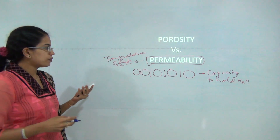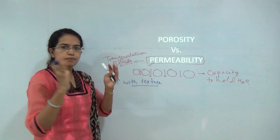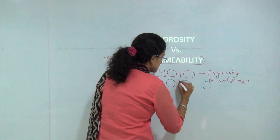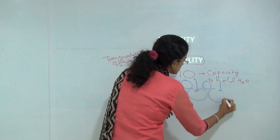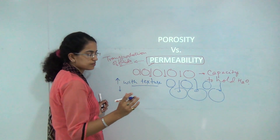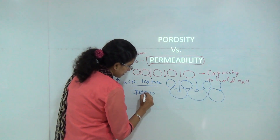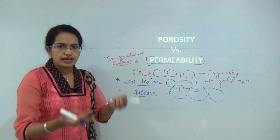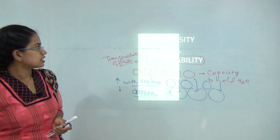Porosity increases with texture — if there are bigger size particles, porosity would increase, as large boulders can hold a lot of water within them. However, permeability decreases with texture — for a soil to be highly permeable you need minute particles. So porosity is the capacity to hold water while permeability is the transportation of the fluid.